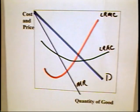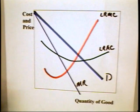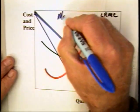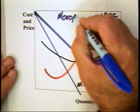Here we have a graph that's very much like the graph for a monopoly. But we can make it for monopolistic competition.